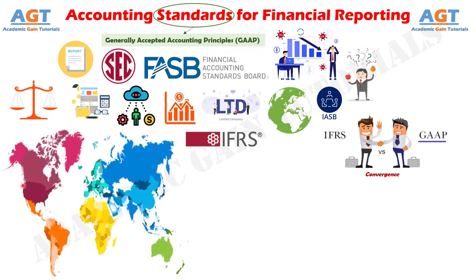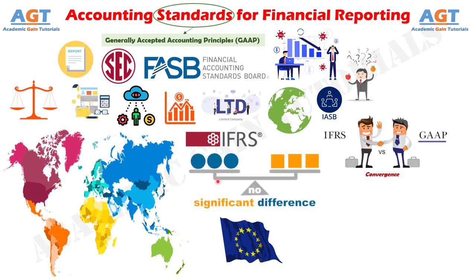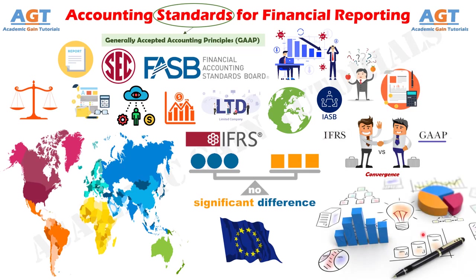Over 100 countries use International Financial Reporting Standards, also called IFRS. For example, all companies in the European Union follow international standards. The differences between U.S. and international standards are not generally significant as a result of these convergence efforts. It is likely that someday there will be a single set of high-quality accounting standards used by companies around the world.